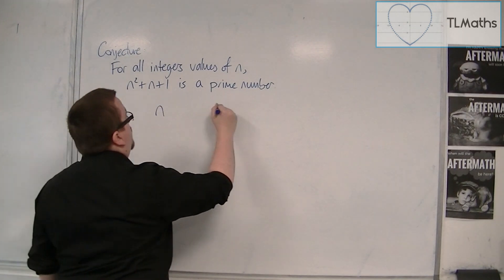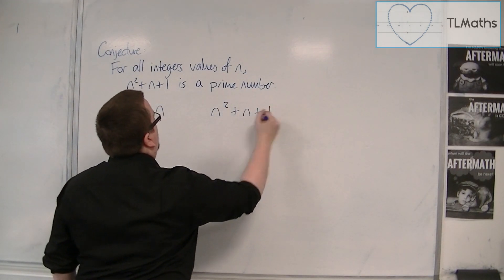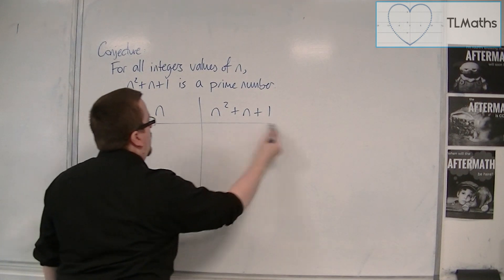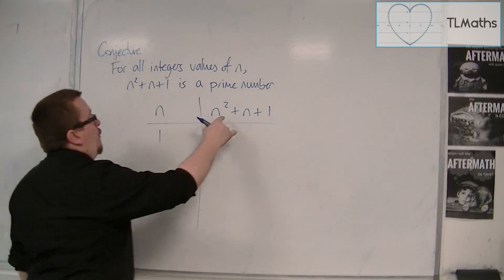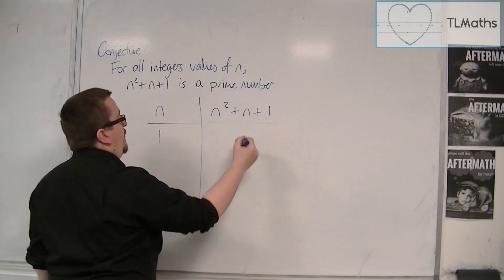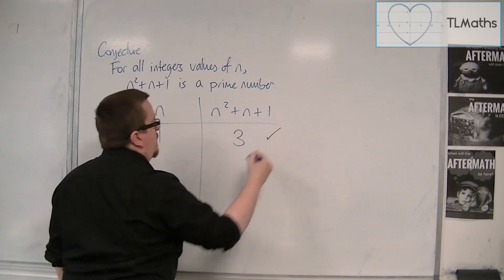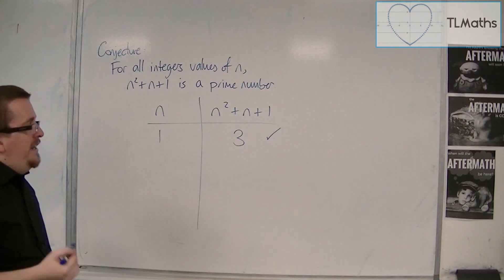So I would probably put together a little table so you can put all your answers in one place. So when n is 1, we have 1 squared plus 1 plus 1. So we have 3. Now that's prime. So for n is 1, it works.